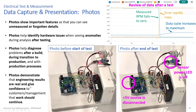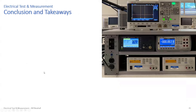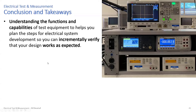Some big takeaways: understanding the functions and capabilities of test equipment is important because it helps you plan the development steps for your project. You have to know what can be measured so you can incrementally verify that your design is doing what you expect. Understanding the oscilloscope's automated measurements, the programmability of the waveform generator, and what the multimeter can measure — all of that helps you perform incremental verification along the development path.